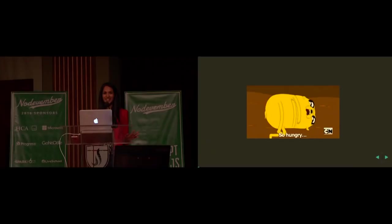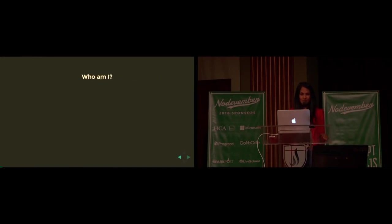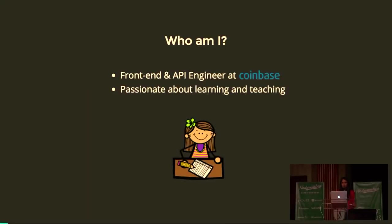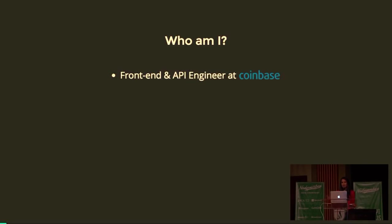Thank you, Amy. My talk today is called Reasonable JavaScript. I know I'm sitting between you and dinner and drinks, so I hope you can give me 45 minutes of your time, and hopefully you'll walk away with something. To start off, who am I? I'm a front-end and API engineer at Coinbase — a digital currency platform that allows you to buy and sell Bitcoin and Ethereum. Right now I'm one of two engineers helping them rewrite the front-end in React. We're a Rails shop rewriting in React; it's been a really massive but fun project.